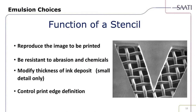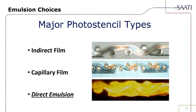The functions of a stencil — also referred to as the image or art you're trying to print — include reproduction of the image to be printed, resistance to abrasion and chemicals, and modifying the thickness of the ink deposit. For small detail only, you can reduce the stencil thickness to create a better dot. It also controls print edge definition. Most photo stencil types include indirect film from the early days, then capillary film, and now direct emulsions. Probably 75 to 80% of screen printers use direct emulsion for ease of use and cost.